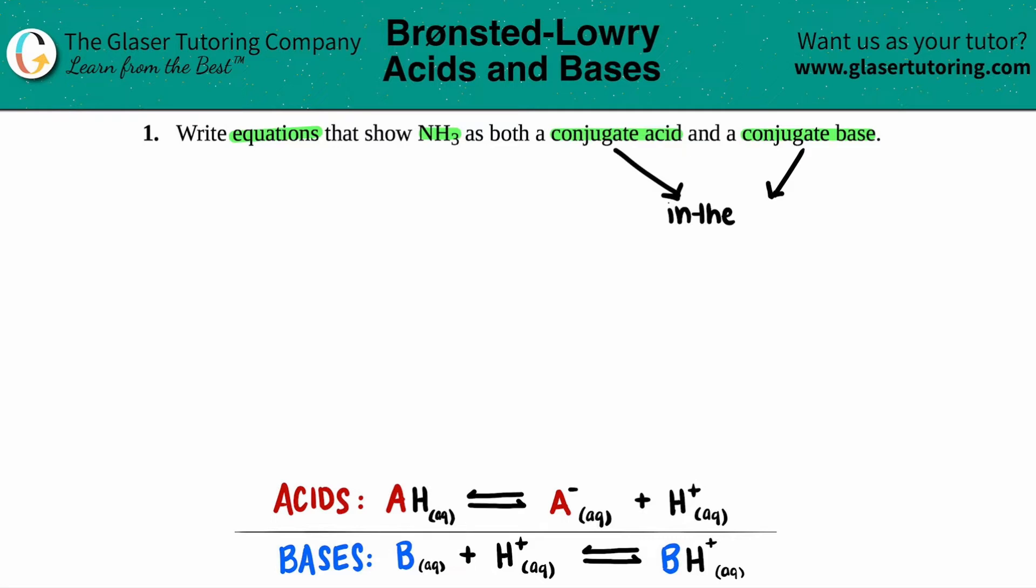So the word conjugate, when I look at the word conjugate, that just means that has to be on the product side. So there's going to be two equations here. One in which NH3 is going to be on the product side acting as the conjugate acid, and then one in which NH3 will be on the product side acting as the conjugate base. So let's just write it out.